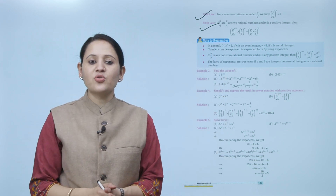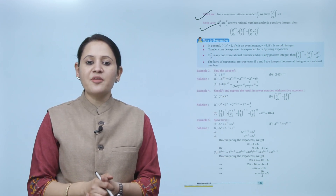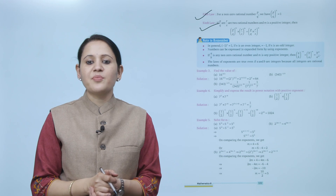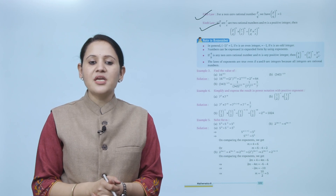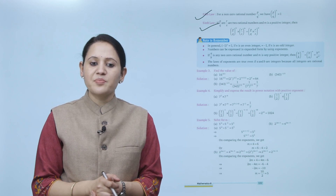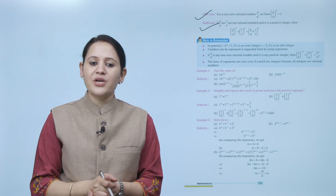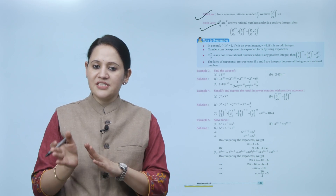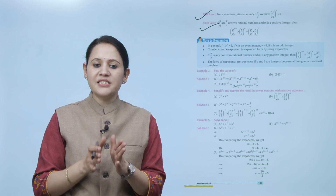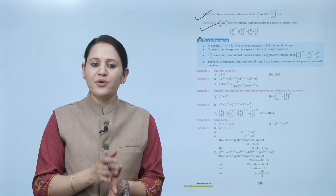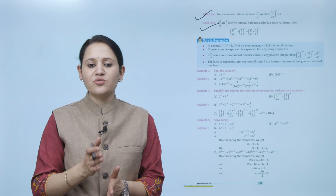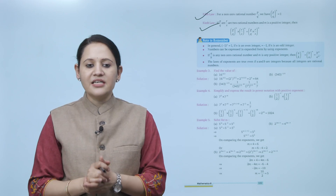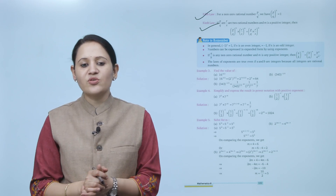Sixth law: if P/Q and R/S are two rational numbers and m is a positive integer, then (P/Q)^m multiplied by (R/S)^m — here the powers are the same but the bases are different — equals (P/Q × R/S) to the power m.